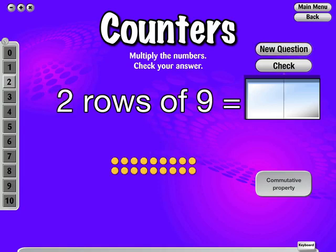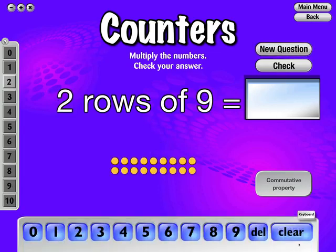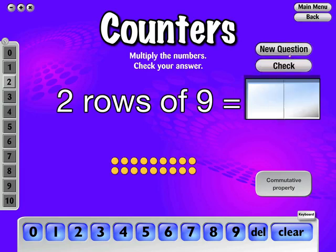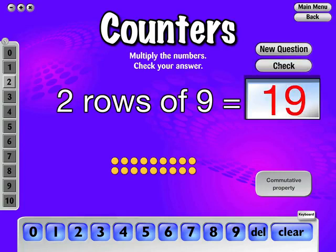There are two ways of answering a question: using the computer's keyboard or by using the on-screen keyboard supplied. The numbers shown on the bar vary according to the materials used in the interactive activity. If the answer is correct, a tick will appear. To create a new question, click on the New Question button. If the answer is incorrect, the answer will turn red. Just click on the answer and try again.